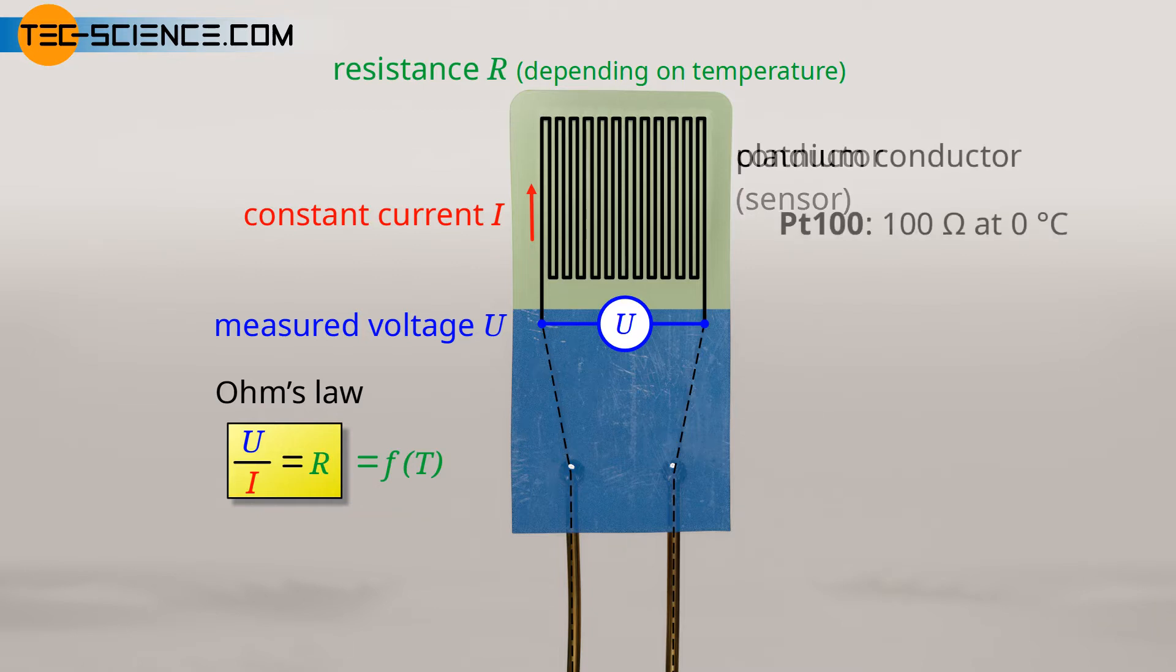A non-corrosive platinum conductor with a nominal resistance of 100 Ohm at a temperature of 0 degrees Celsius is often used as the sensing resistor. These characteristics give this type of resistance thermometer the name PT100. There are also platinum temperature sensors which have a nominal resistance of 500 Ohm or 1000 Ohm at 0 degrees Celsius. These sensors are referred to as PT500 and PT1000 respectively.